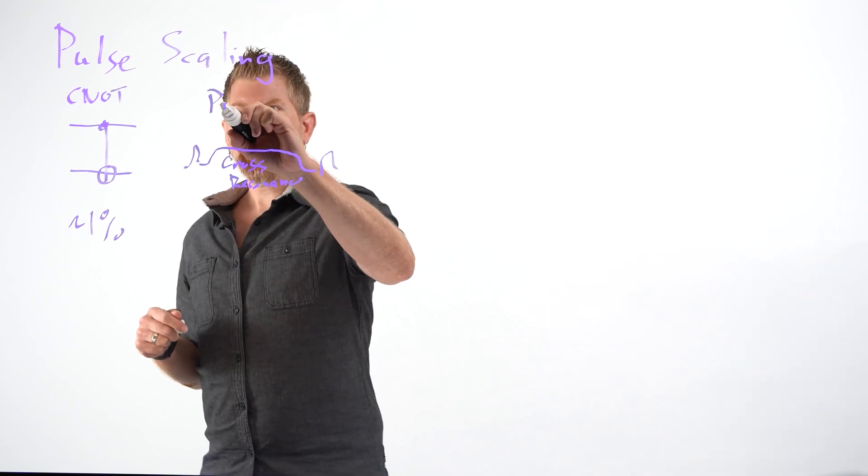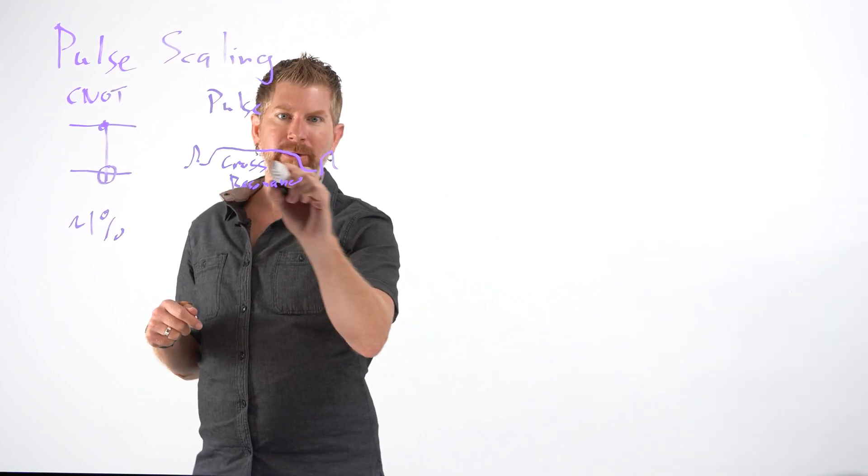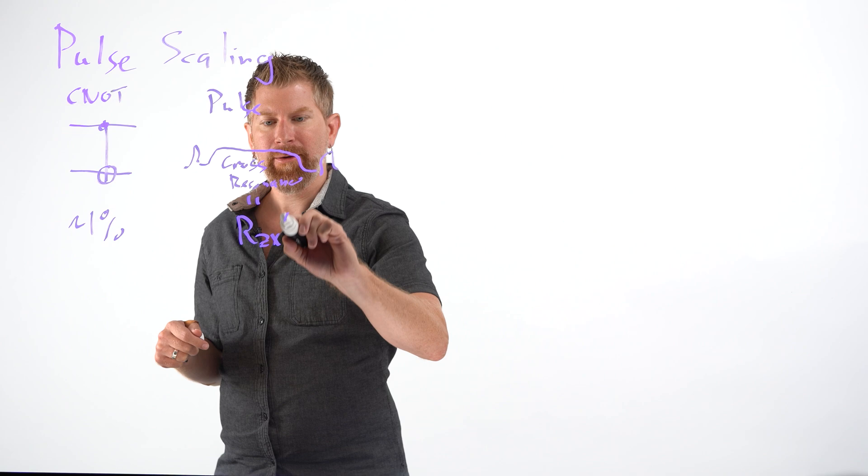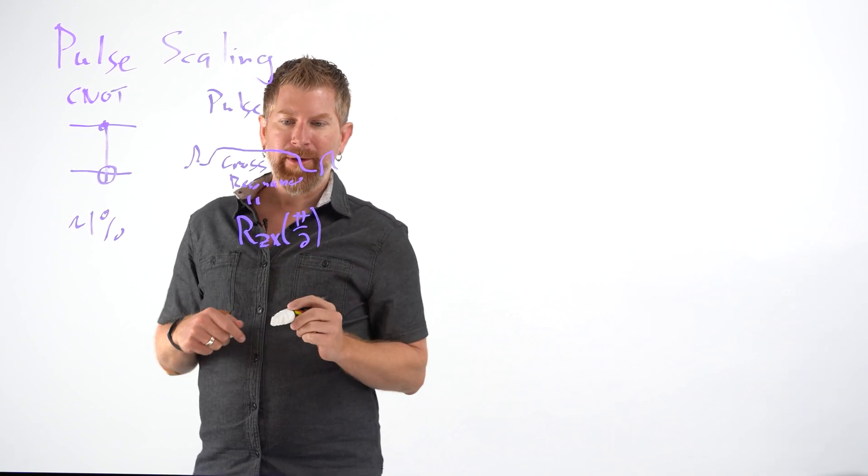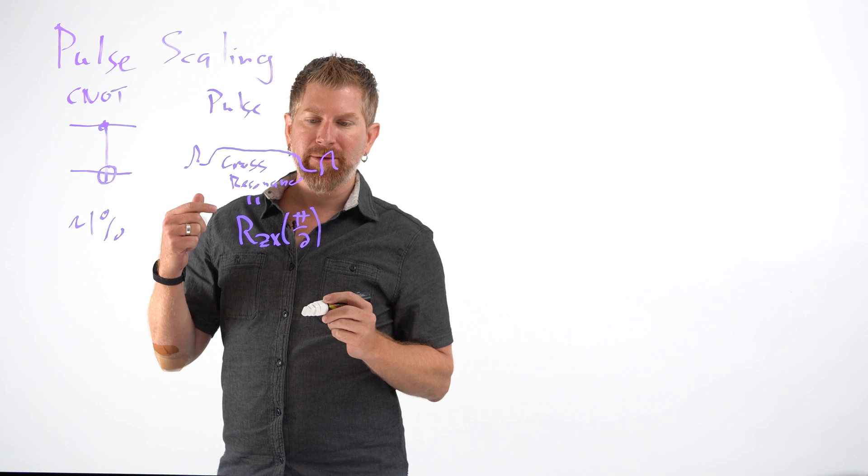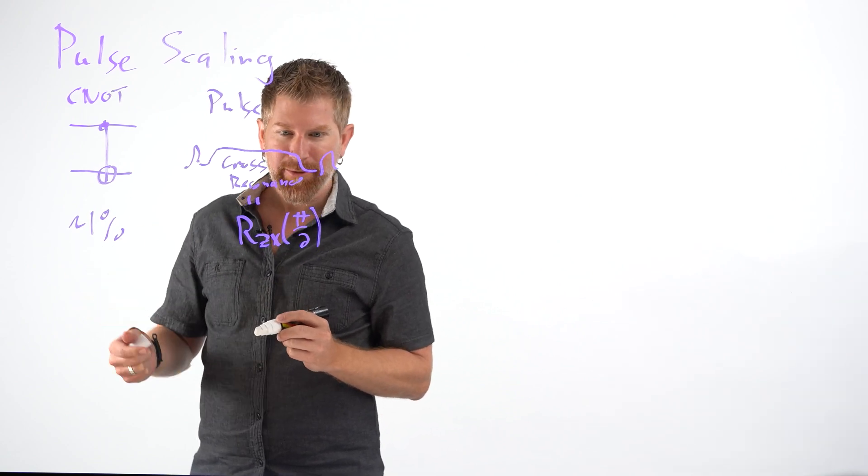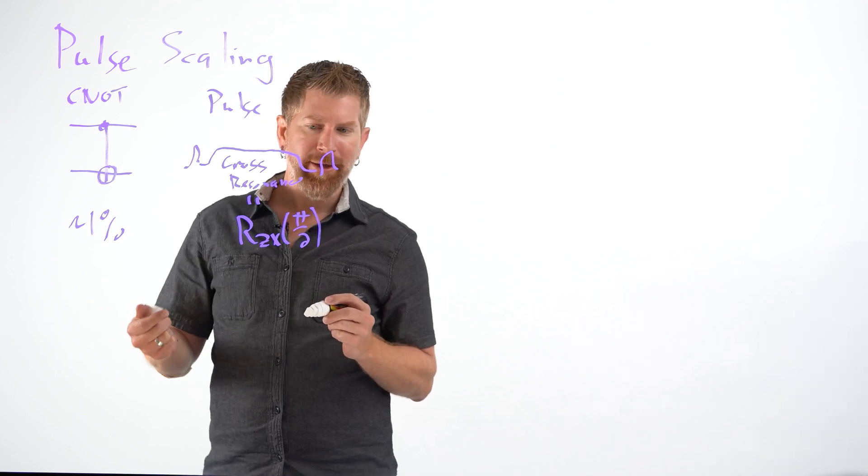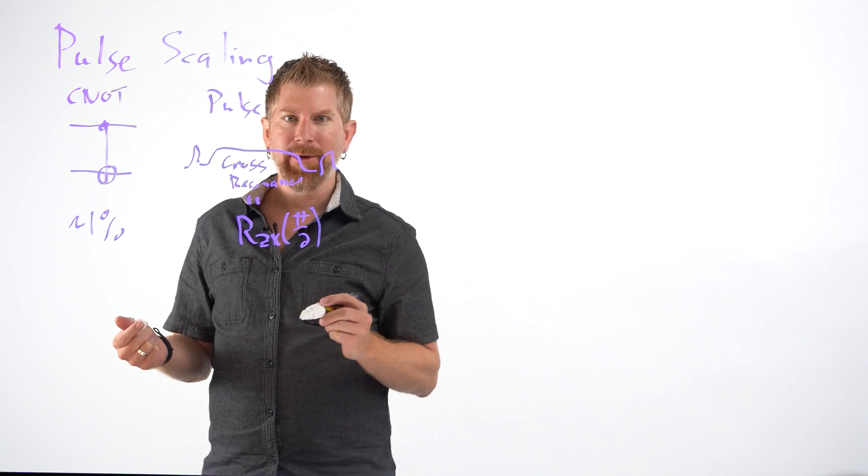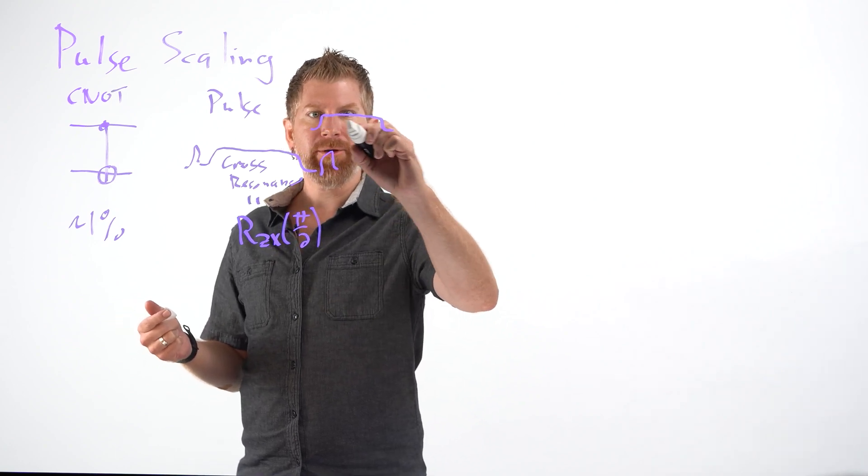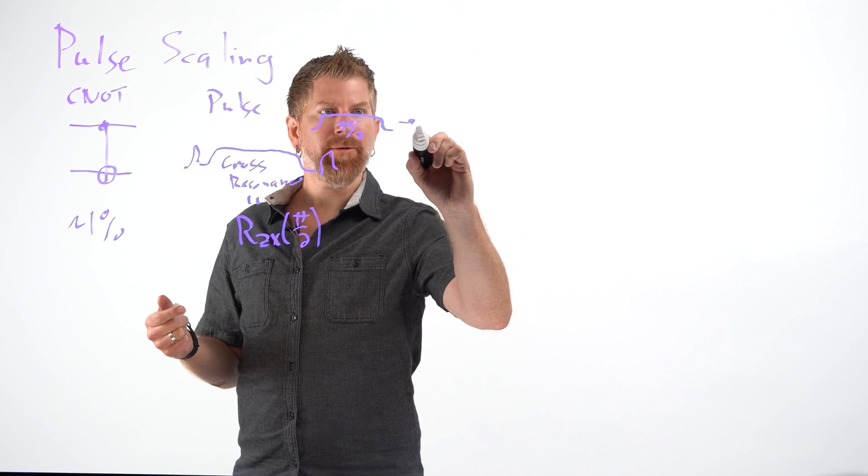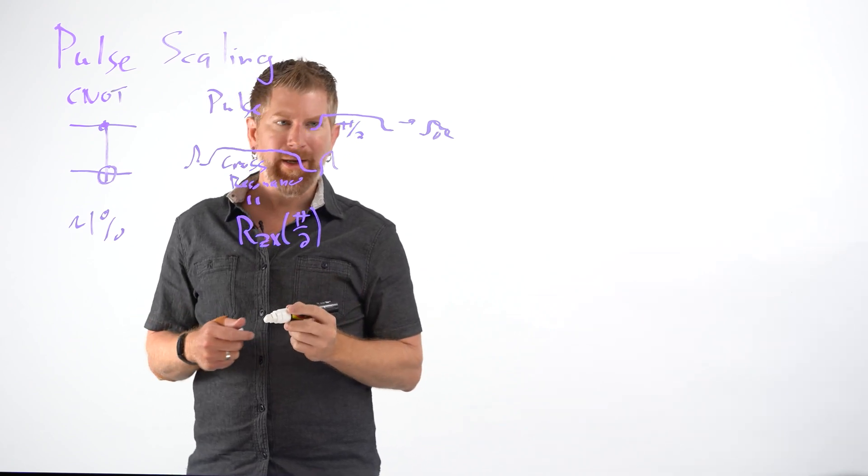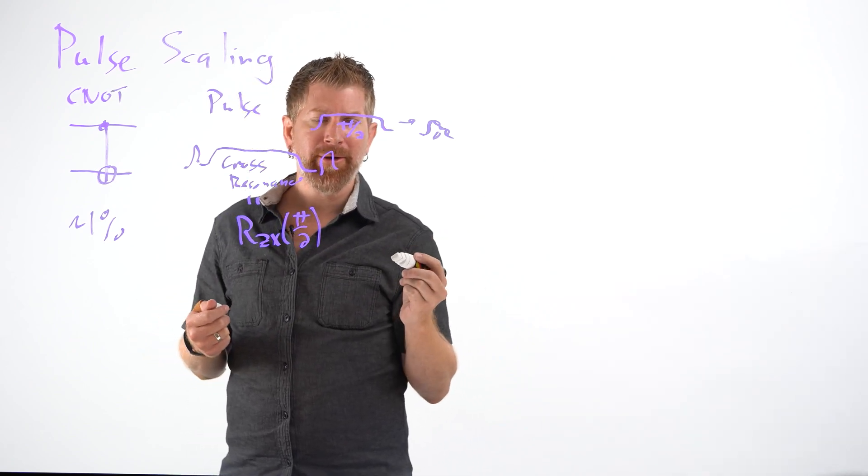So in the pulse picture, most of the error comes from this large pulse, and this actually represents something that is similar to a CNOT but it's an RZX interaction. It's a rotation of pi over 2 in the two qubit Hilbert space. And so what we can do, if we want to get less error, if we have a smaller angle we want to represent, we can scale this pulse from pi over 2 to some other angle, a smaller angle.